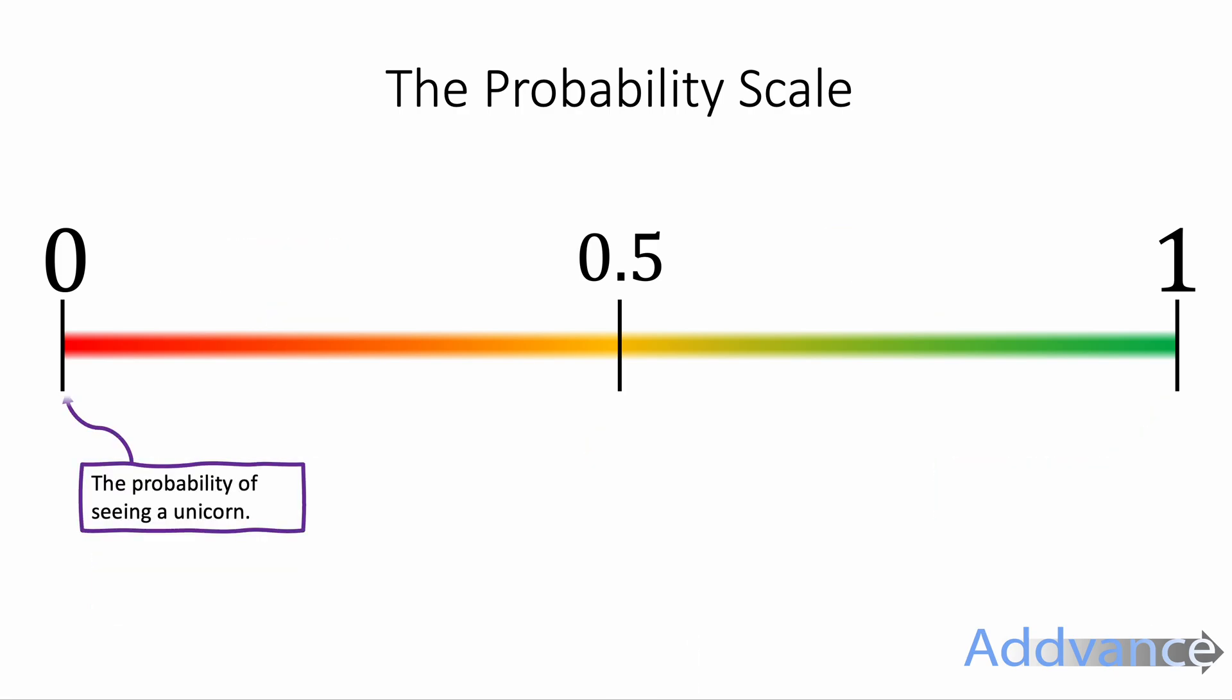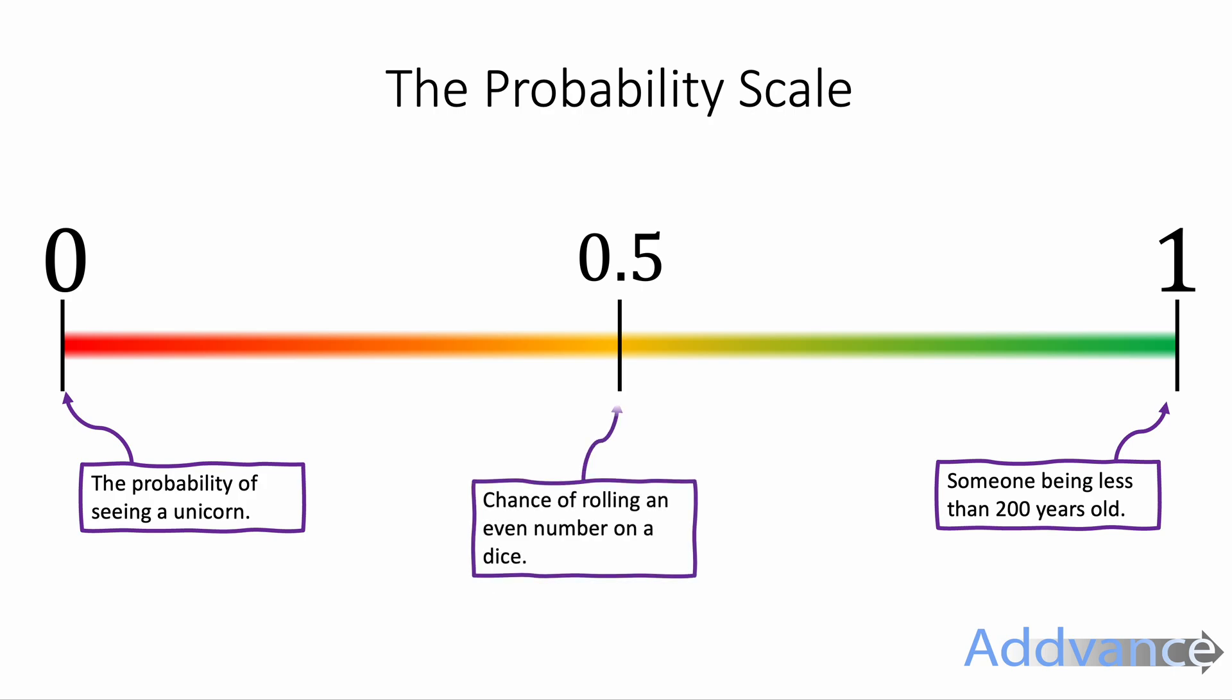Let's see some examples. The probability of seeing a unicorn is 0. The probability of someone being less than 200 years old is definite. You cannot have someone more than 200 years old, so they definitely must be less, and that has a probability of 1.